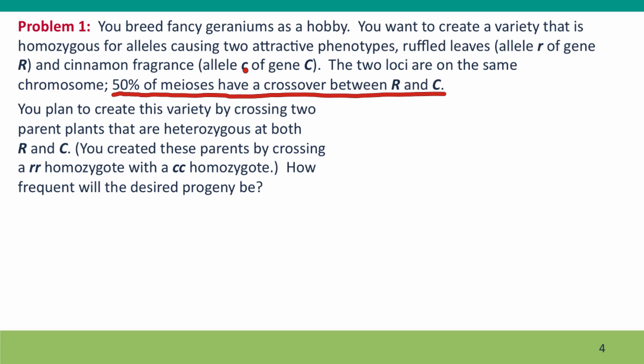So what's the first step? Well, probably the first step is what will the gametes be. But then you realize, wait, what's the genotype of the parent plants? You're crossing two plants that are identical, but what's their genotype? Well, they're heterozygous at R and heterozygous at C. So their genotype must be big R little r, big C little c.